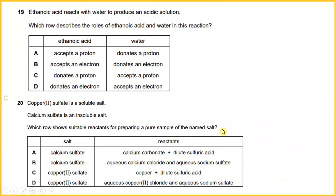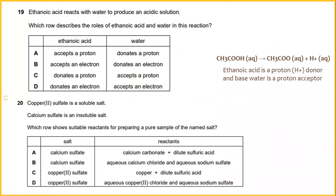Ethanoic acid reacts with water to produce an acidic solution. Which will describe the role of ethanoic acid and water in the reaction? Ethanoic acid is a proton donor and base water is a proton acceptor. The answer, I would say, is donate a proton, which is ethanoic acid. Ethanoic acid donates the proton and water will accept a proton.